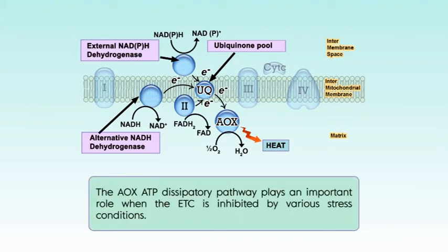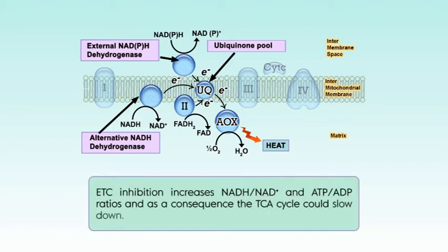The AOX ATP-dissipatory pathway plays an important role when the electron transport chain is inhibited by various stress conditions. Electron transport chain inhibition increases NADH to NAD+ and ATP to ADP ratios, and as a consequence the TCA cycle could slow down. But against this, AOX contributes to the maintenance of electron flow and the production of reducing equivalents to help maintain the TCA cycle. Indeed, AOX activation occurs in direct response to stress.